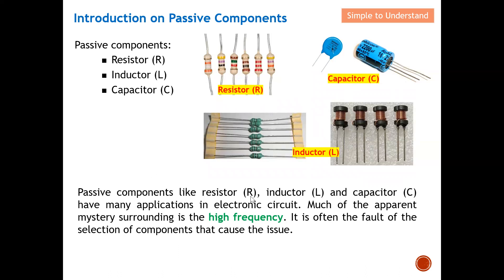Passive components like resistor, inductor, and capacitor have many applications in electronic circuits. Much of the mystery surrounding them is their behavior at high frequency. In DC they work quite predictably, but under high frequency the resistor may also have undesired effects. We are going to see how to avoid these undesired effects, especially when using passive components at high frequency. It is often the fault of component selection that causes this issue — if we don't choose the appropriate component at high frequency, problems arise.